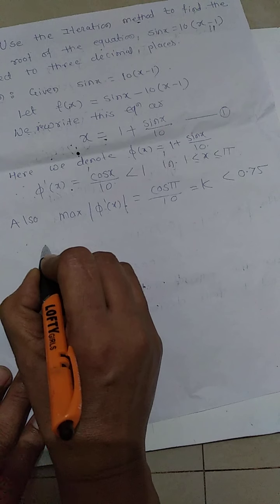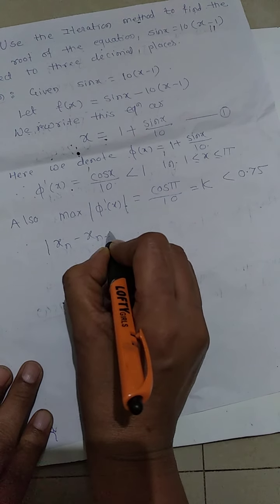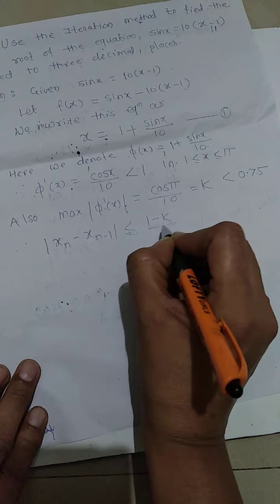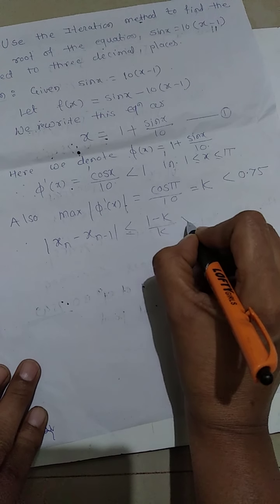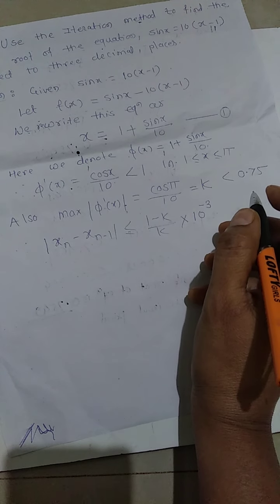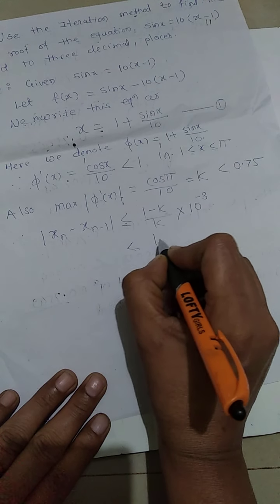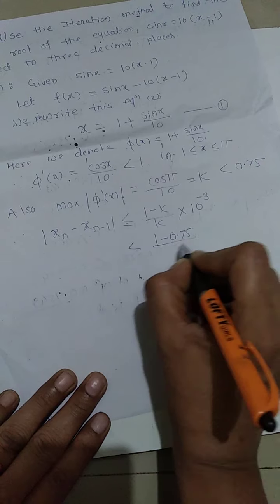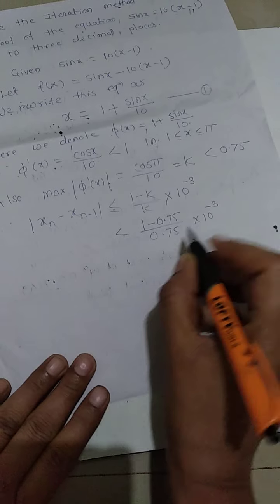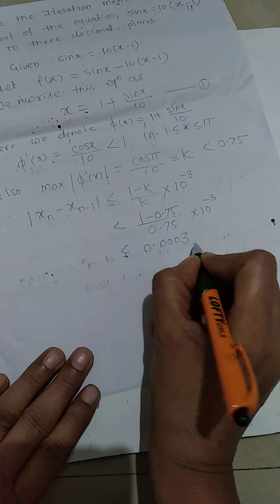Therefore |xₙ - xₙ₋₁| < k/(1 - k) · |x₁ - x₀|. With k = 0.75, we get 0.75/(0.25) × 10^(-k), and that is equal to 0.0003.